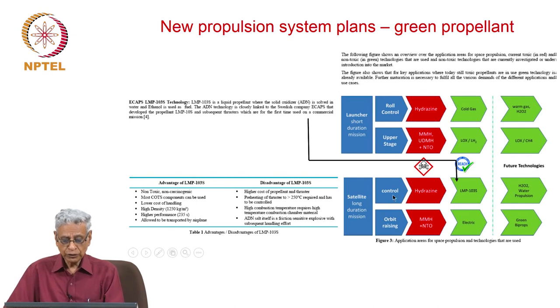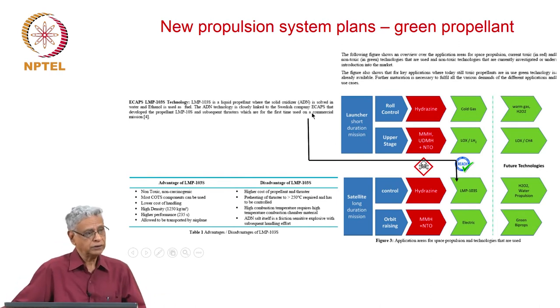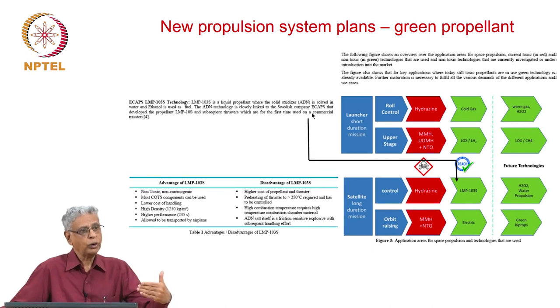In the case of long duration machines for control, you use hydrazine generally, and for orbit raising you can use MMH and N2O4, which is standard practice even in our country. You can also use electric propellants or green propellants, and one of them is LMP-103S. I am pointing it out because it has already been used on a commercial basis. It is sold and can be deployed on satellites. It is based on a solid oxidizer called ADN dissolved in water, and ethanol is used as fuel. Some company in Sweden has developed it.